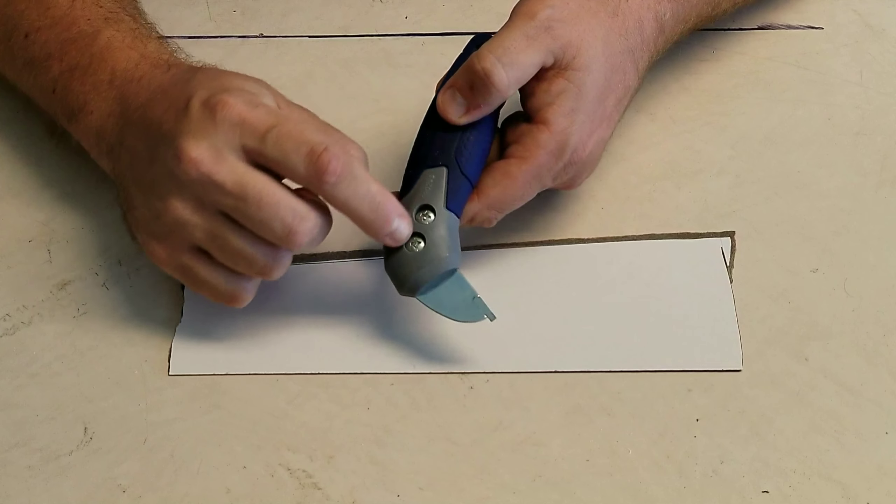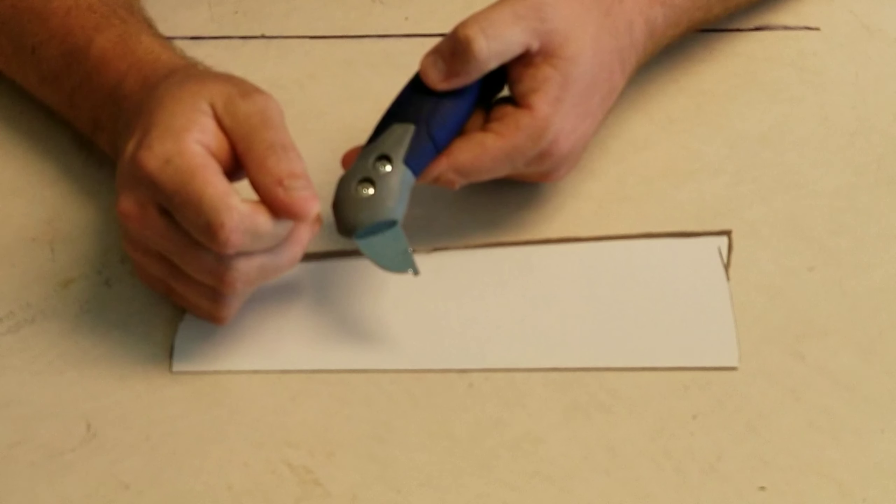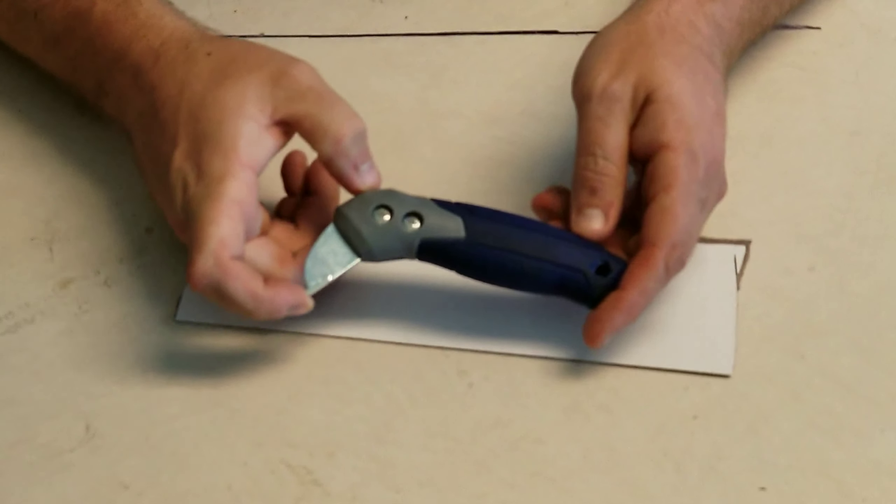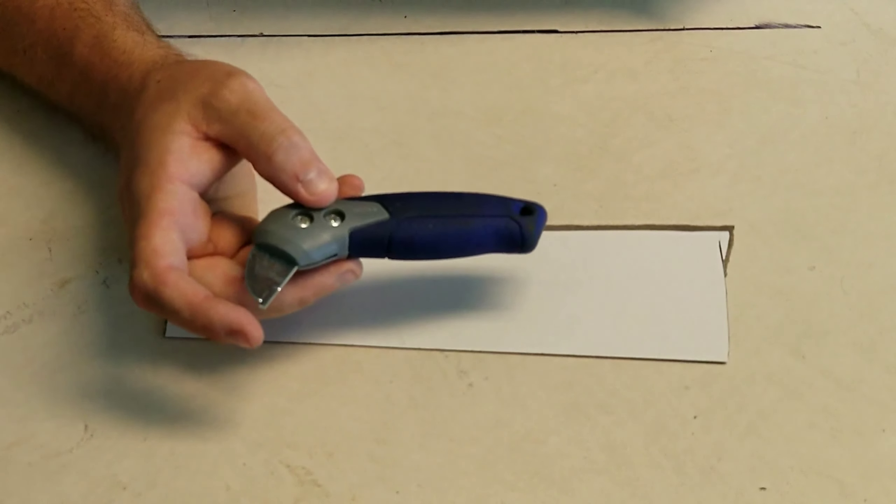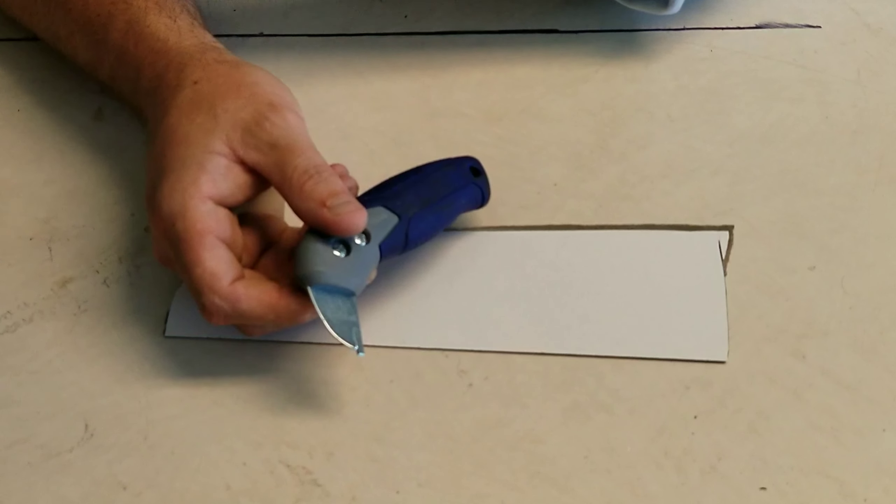You can take these two screws out and this blade will flip around so you have double use out of your blade. I think these are under $10, really around $5. I'm going to show you how it cuts right now.